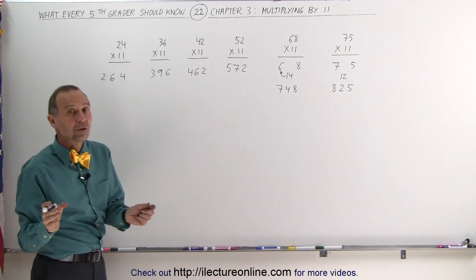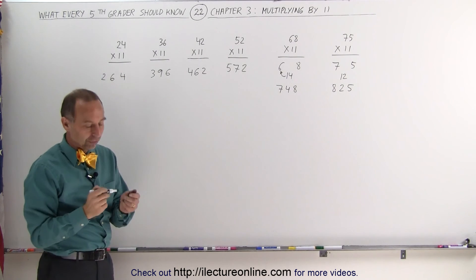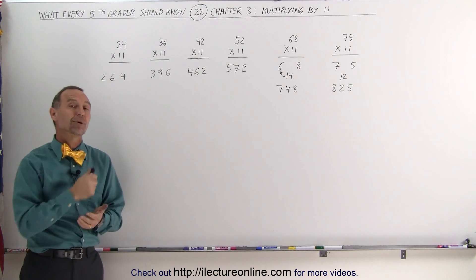So even when the two numbers add up to something that is bigger than 9, you can still do it, but you just have to add one more to the first number, and that's how you multiply by 11. It's a pretty neat trick.